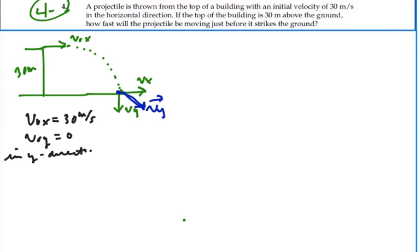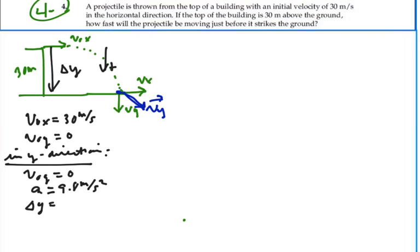If we only look first at the y direction, let's define down as positive. Our initial velocity would be zero. With down positive, our acceleration would be 9.8 meters per second squared. And we know ultimately we're going to go a full displacement down to the ground, so that is going to be 30 meters. Our displacement would be a positive 30 meters because down is positive.